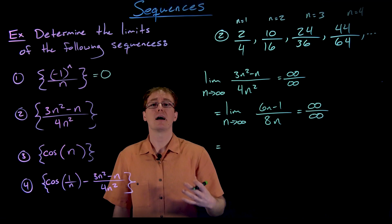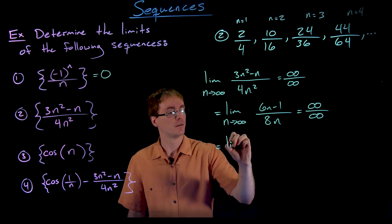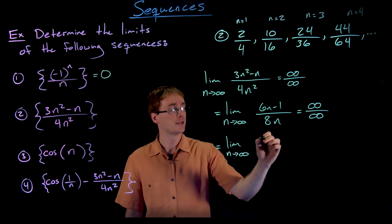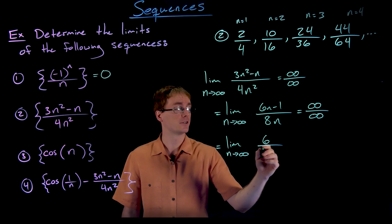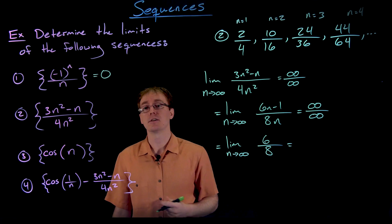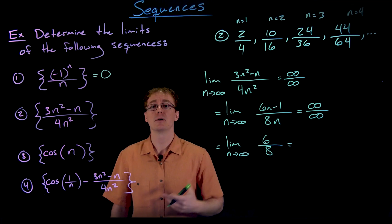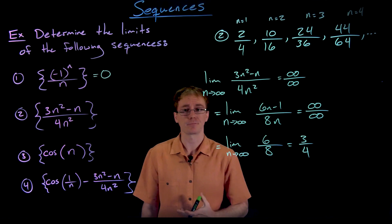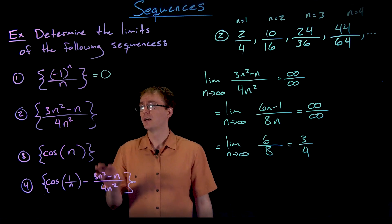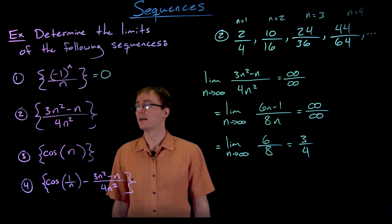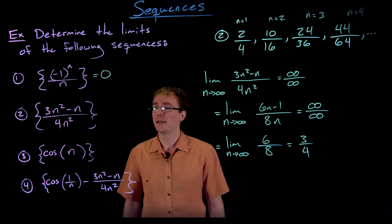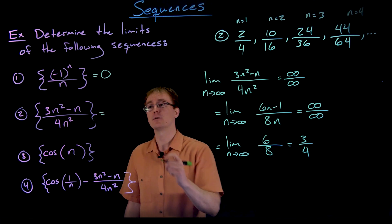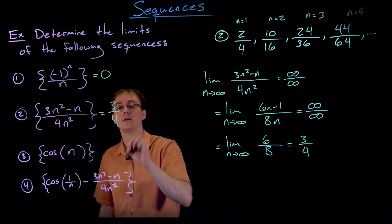So what do we know? The sequence defined by (3n²- n) / (4n²) converges, and its terms get closer and closer to 3/4.